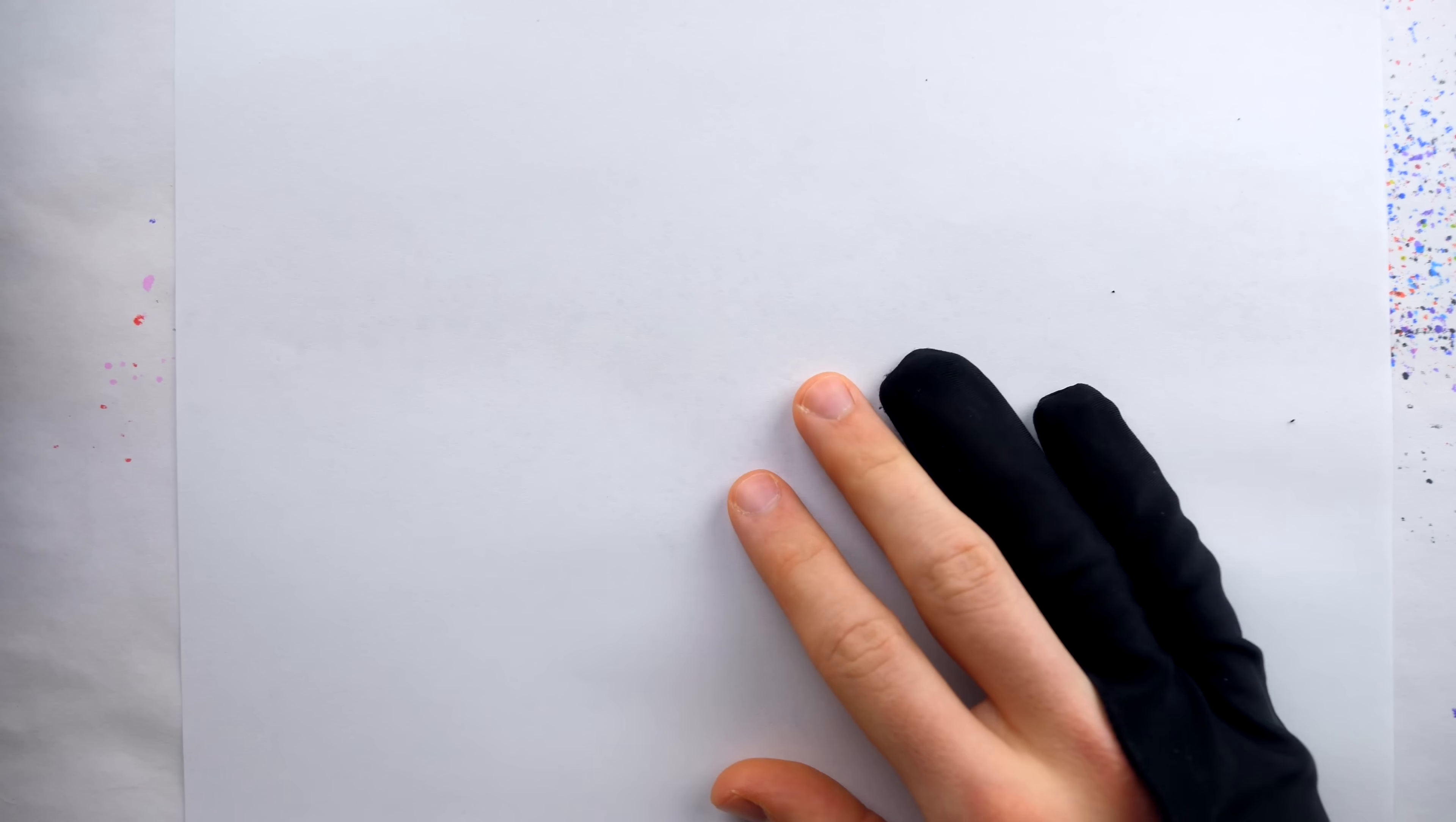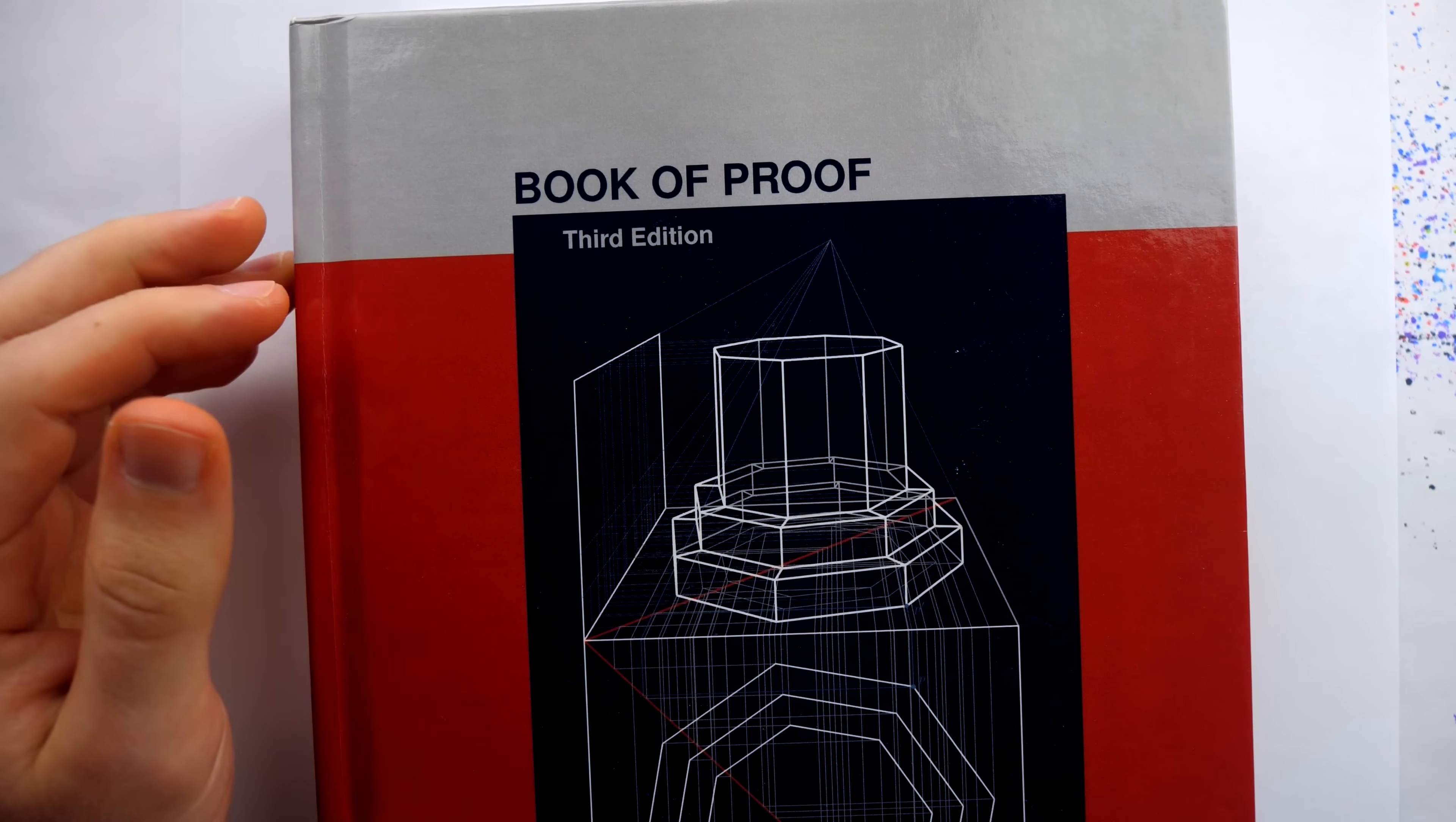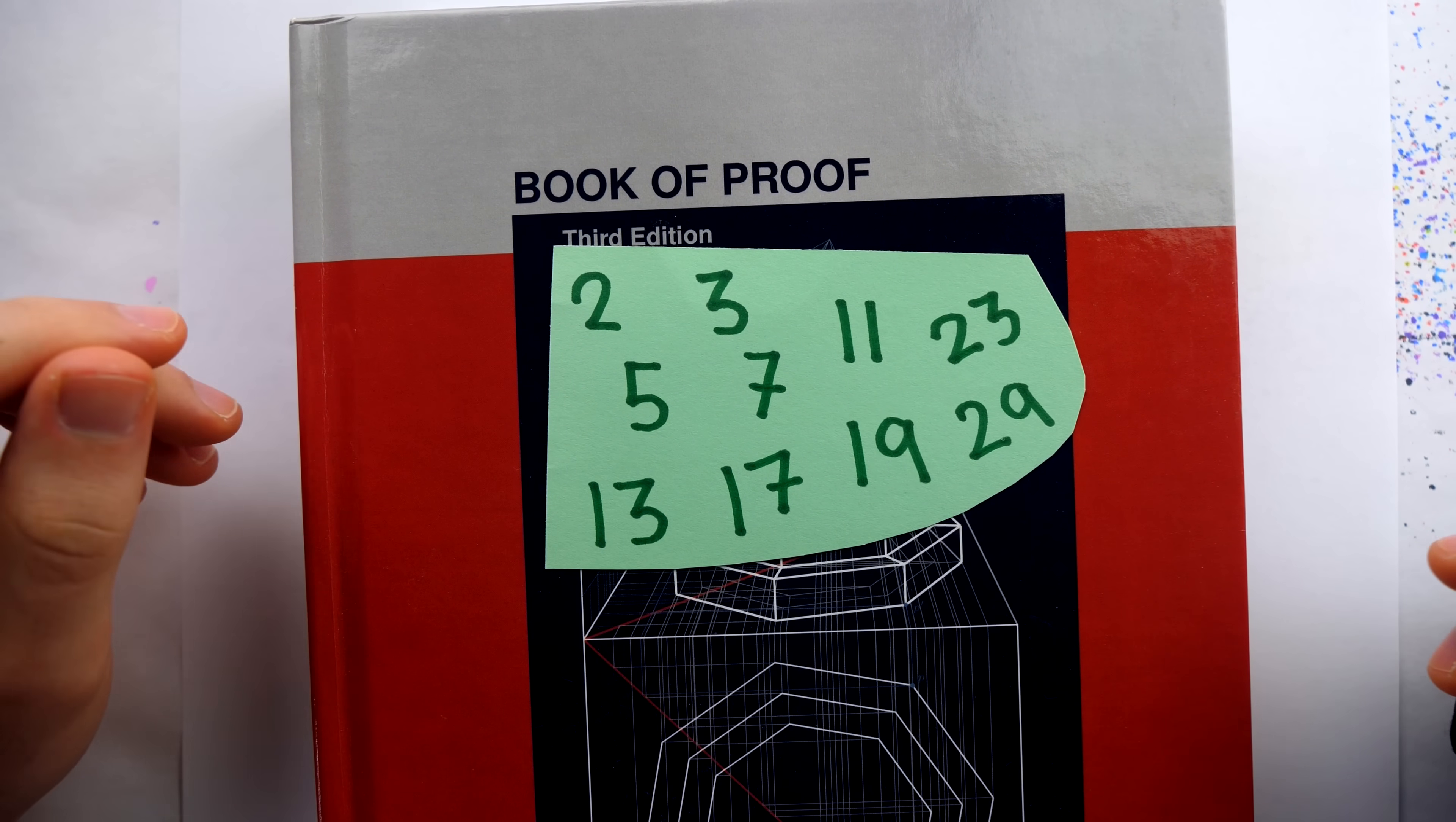When it comes to things that math nerds love, smelling math books, proofs, and prime numbers have got to be in the top five.